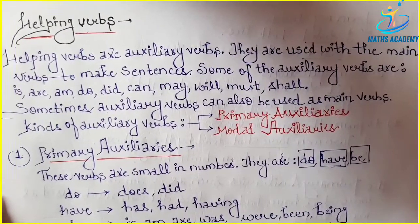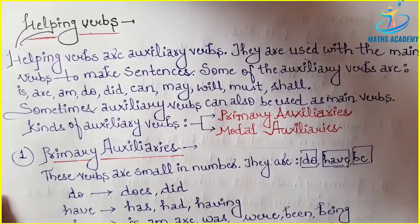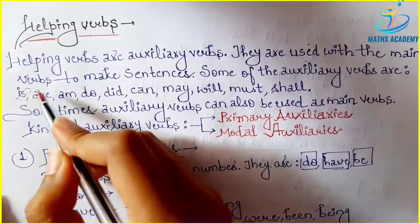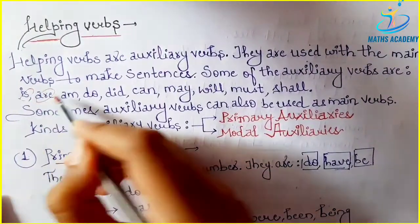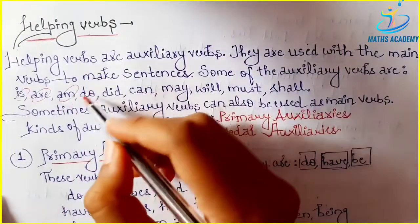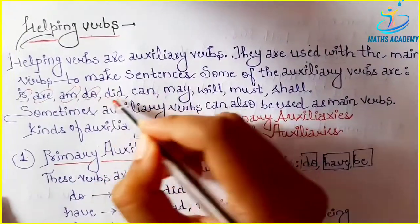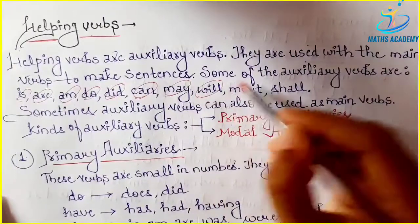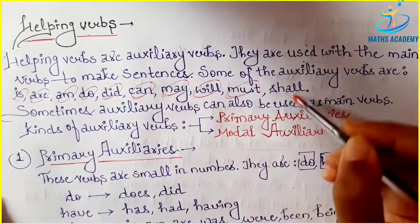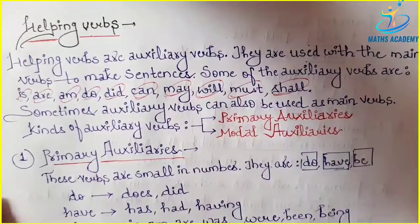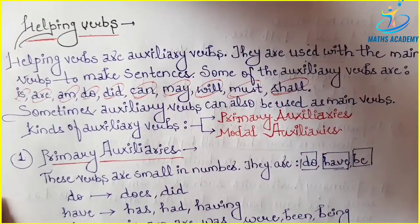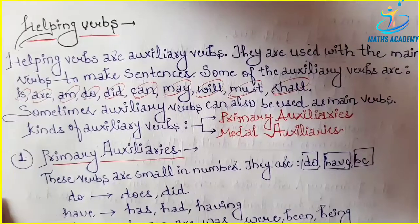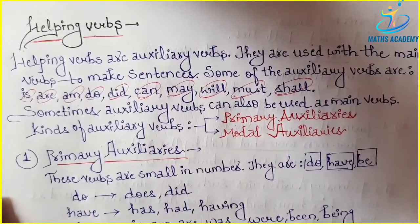Some of the auxiliary verbs are: is, are, do, did, can, may, will, must, shall. These are all the helping verbs, or we can say auxiliary verbs, which are being used with the main verbs.